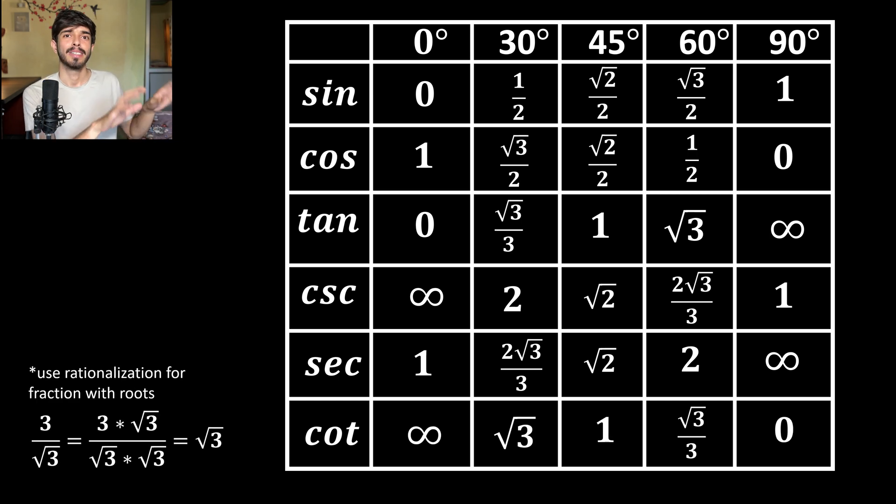Try to make this table like this one or two times. Then you can make this really really fast because it's very easy. You just need to remember 0, 1, 2, 3, 4, divide by 4 and take square root.